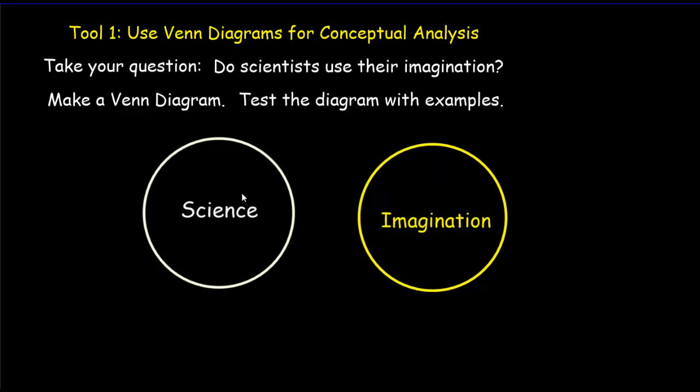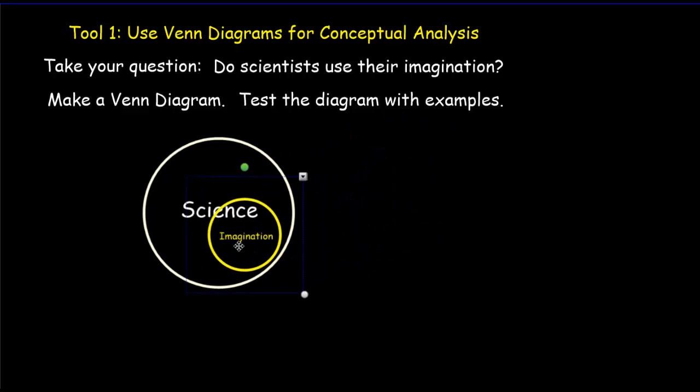So I can arrange these in different ways, just like I can in a Venn diagram. And I can take, say, imagination and put it inside of science, which is to say that all imagination is in science. Now, there's probably some people in the arts that would disagree with that. So I don't think that's a good choice.